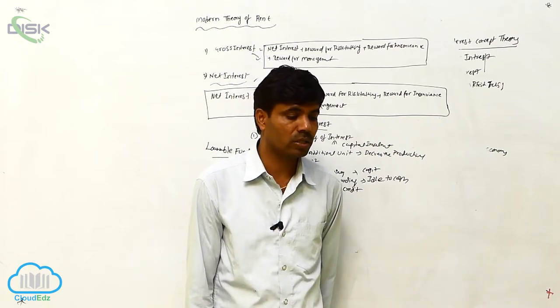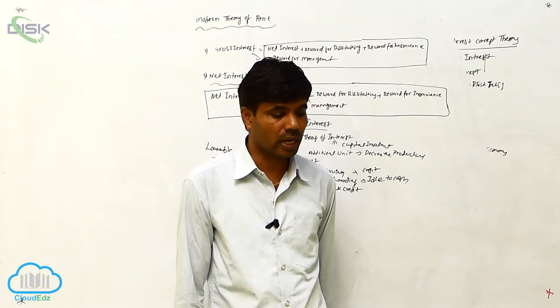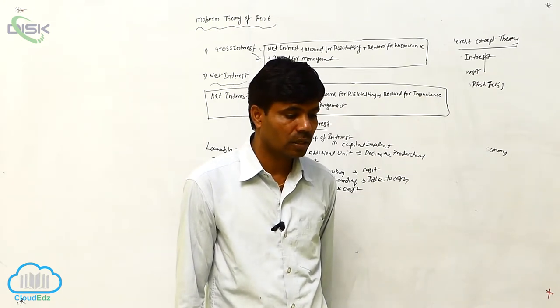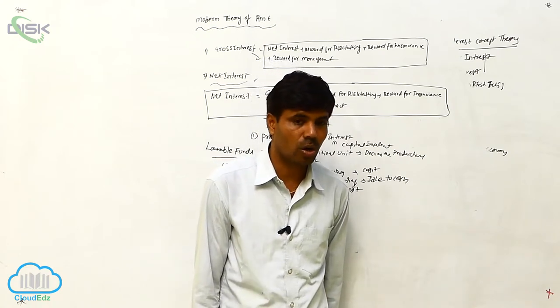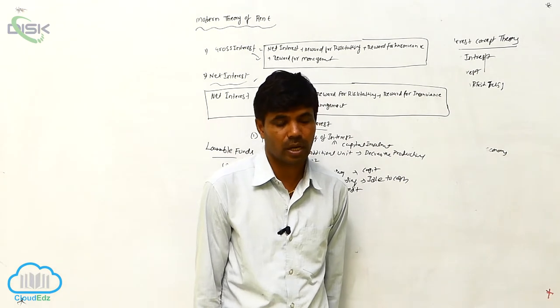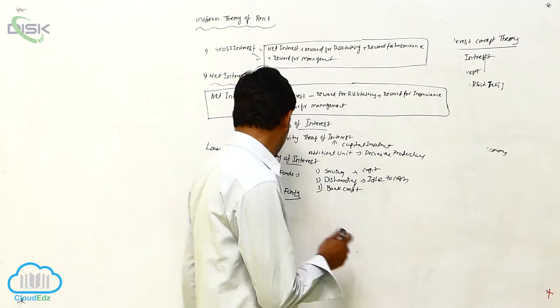In demand of loanables, the demand loanable funds main playing the role of three categories. First is investment, dissavings, and hoardings. These are the things main playing the role from this category.